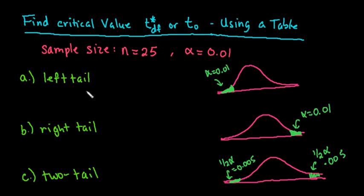If you have a left tail, that means that your alpha is down here. For a right tail, your alpha is in the right side. And for a two tail, it's in both.